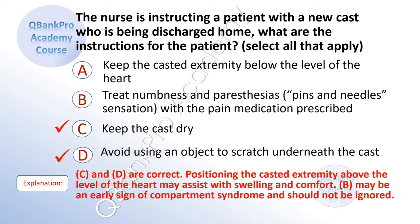The correct answers are C, keep the cast dry, and D, avoid using an object to scratch underneath the cast. Explanation: positioning the casted extremity above the level of the heart may assist with swelling and comfort. Numbness and paresthesia may be an early sign of compartment syndrome and should not be ignored.